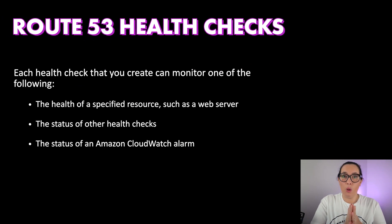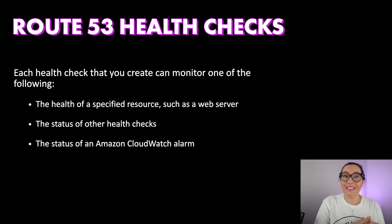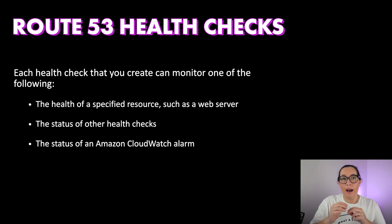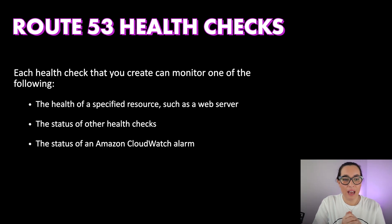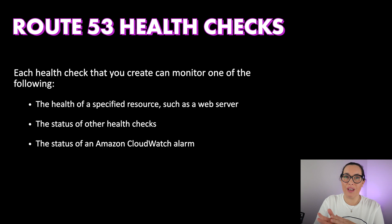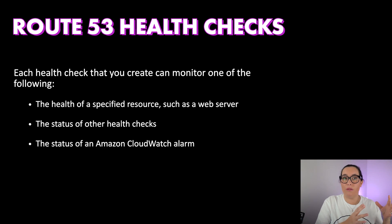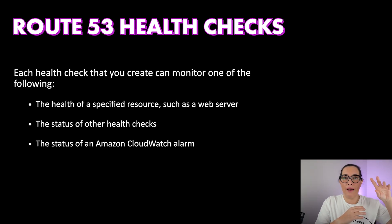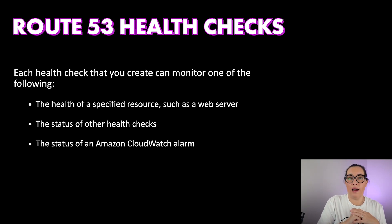That is possible because of Route 53 health checks. Route 53 health check is a feature that allows you to create health checks to monitor different kinds of resources. You can create a health check specifically for a resource — for example, a web server with a health check API endpoint that returns a 200 status. Route 53 will route traffic based on whether that check passes.